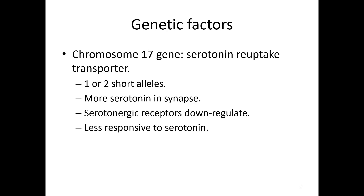For chromosome 17 and this particular gene, if you have long alleles — long variations of these alleles — you are less likely to develop a mood disorder. However, if you have one or two short alleles, research has found that you will typically have more serotonin in the synapse. When you have more serotonin in the synapse, your brain will downregulate or cut the number of receptors for serotonin, so you become less sensitive to it. Because the reuptake transporter isn't working properly, serotonin receptors will cut their numbers, making somebody less responsive to serotonin.